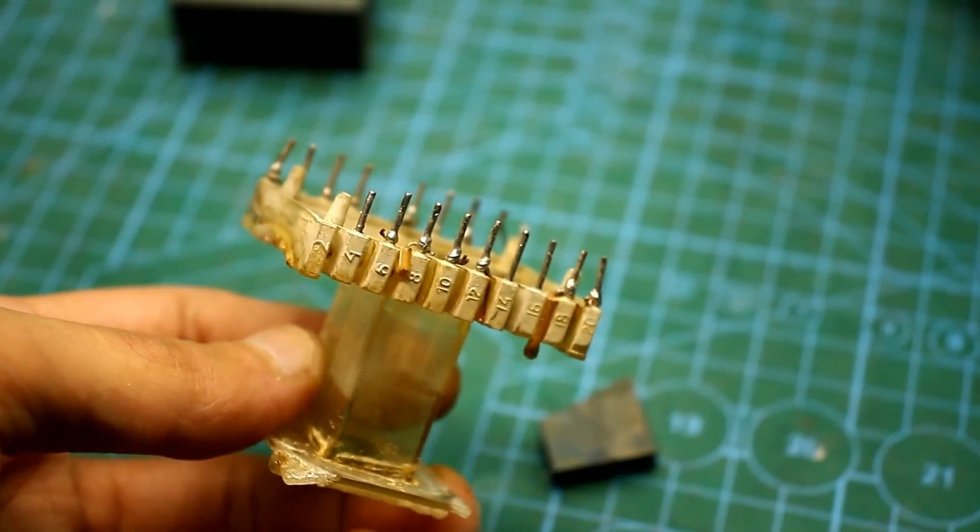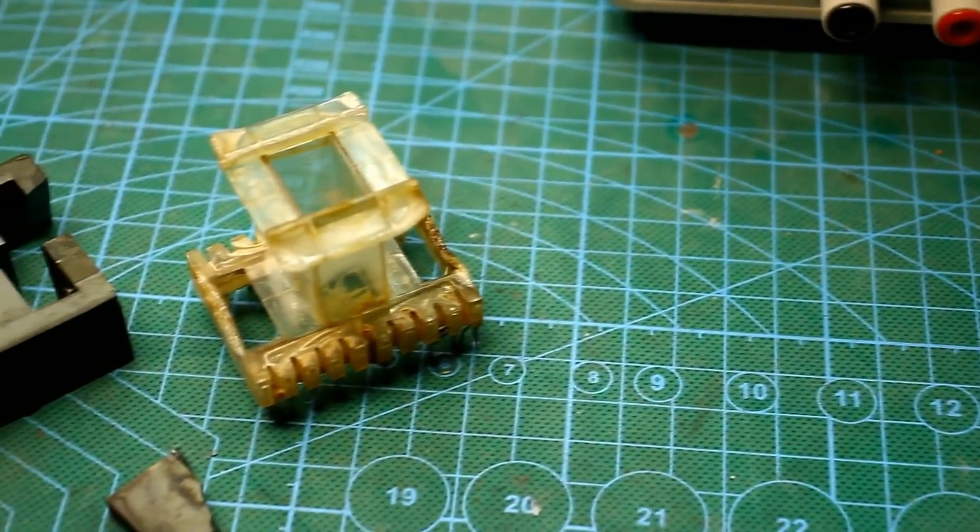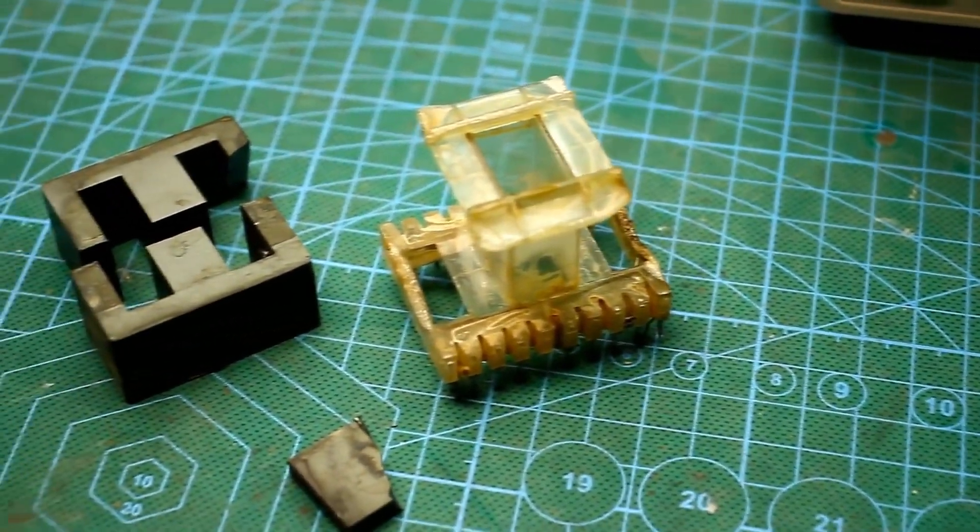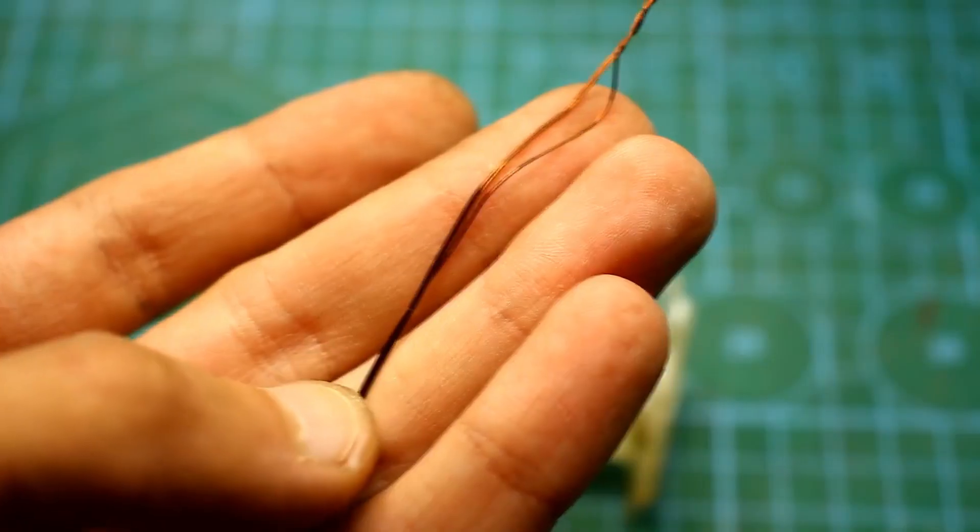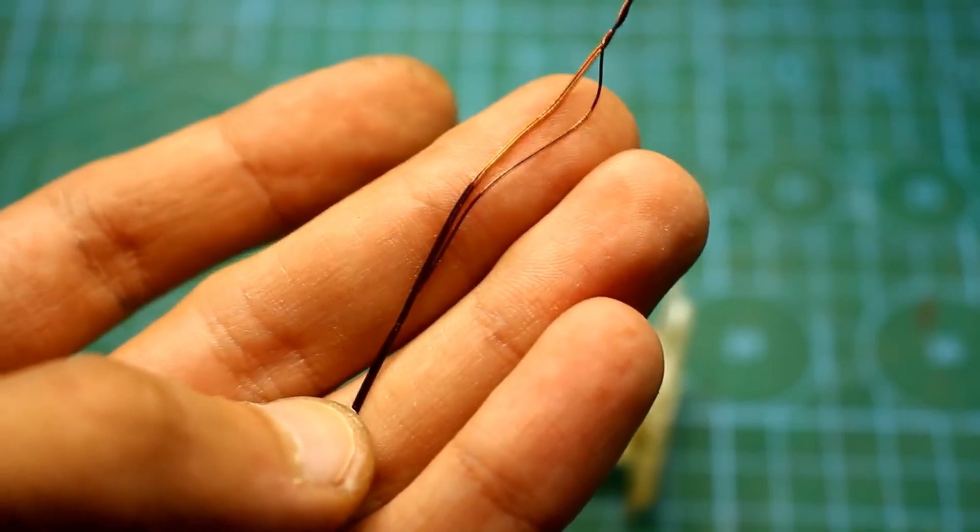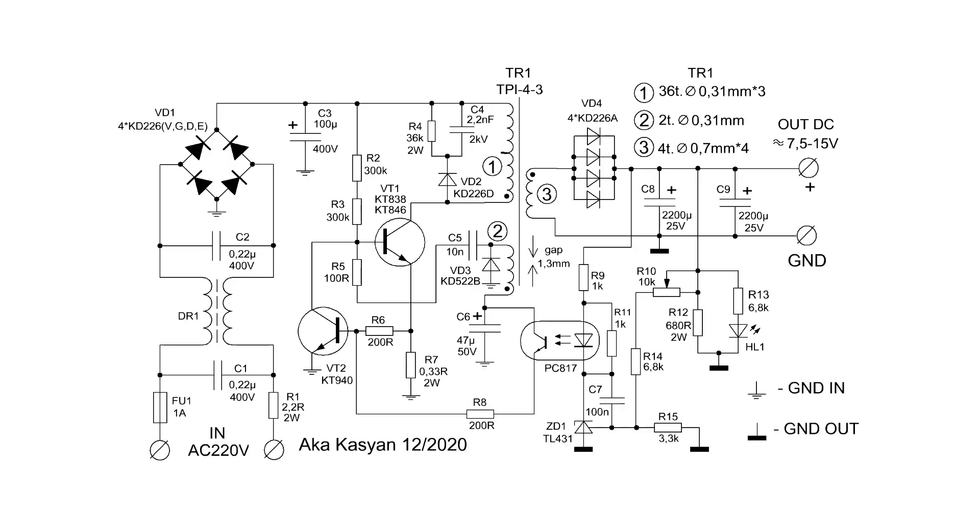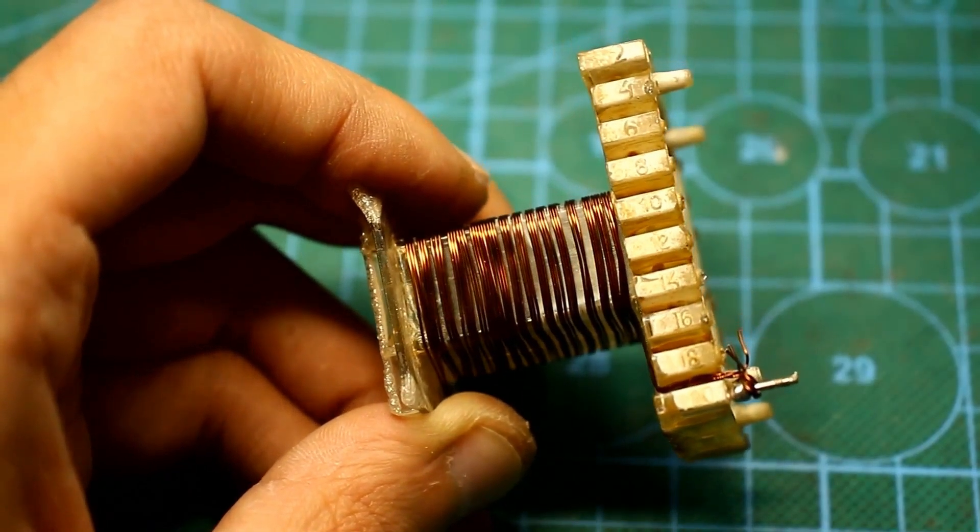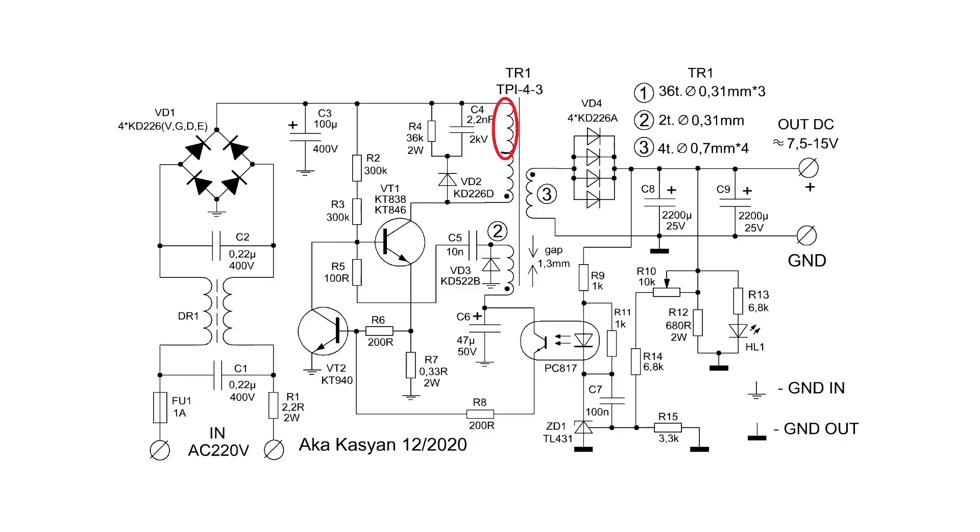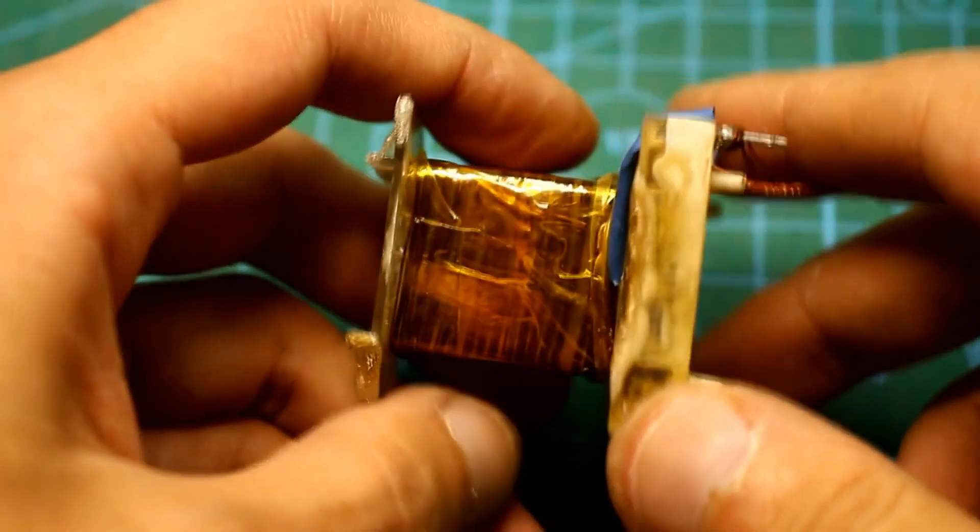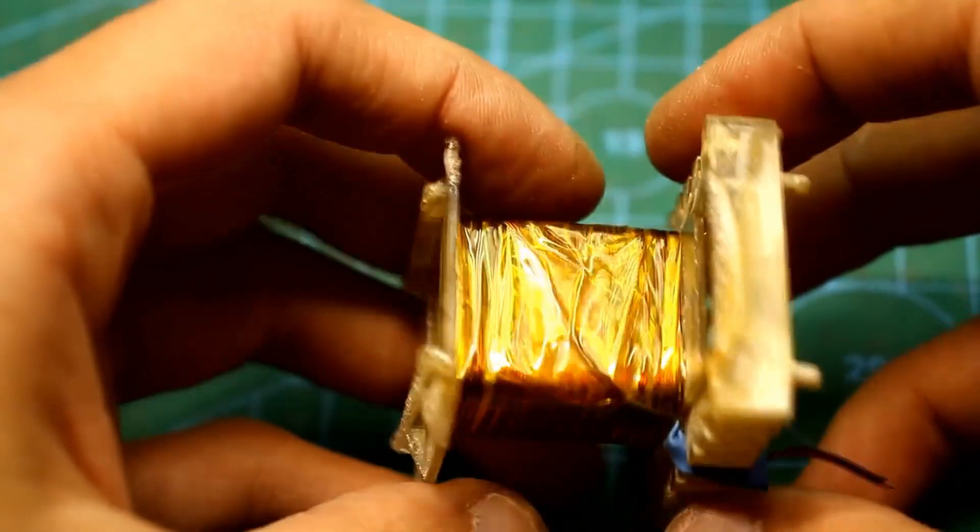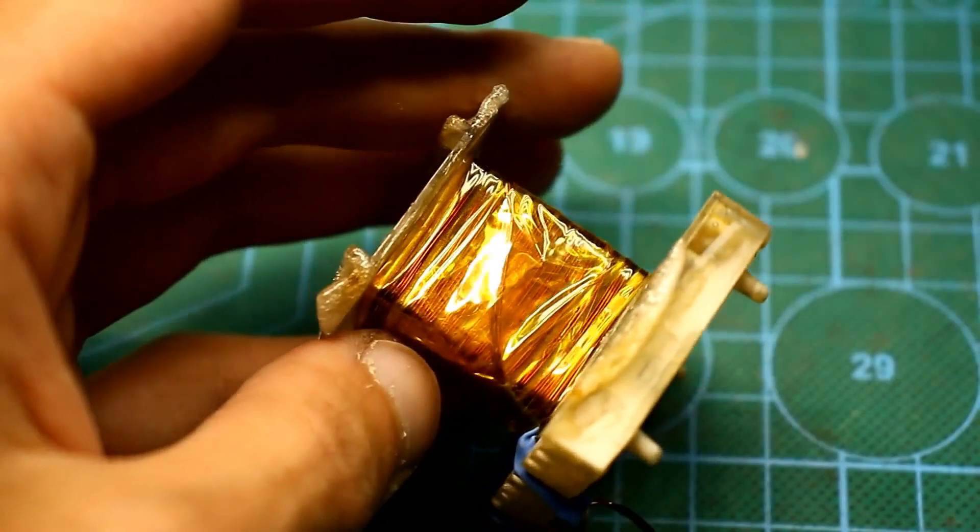After that, all the factory windings are removed from the frame, and new ones need to be wound in their place. First, the primary or collector winding is wound. It consists of 36 turns with a triple wire of 0.33 millimeters. The winding is not done all at once. First, we wind half of this winding on the bare frame, which is 18 turns. The winding leads can be insulated with heat shrink tubing. Next, we insulate the winding itself. You can use the original insulation, but I prefer Kapton heat-resistant tape. We apply three to four layers of insulation.